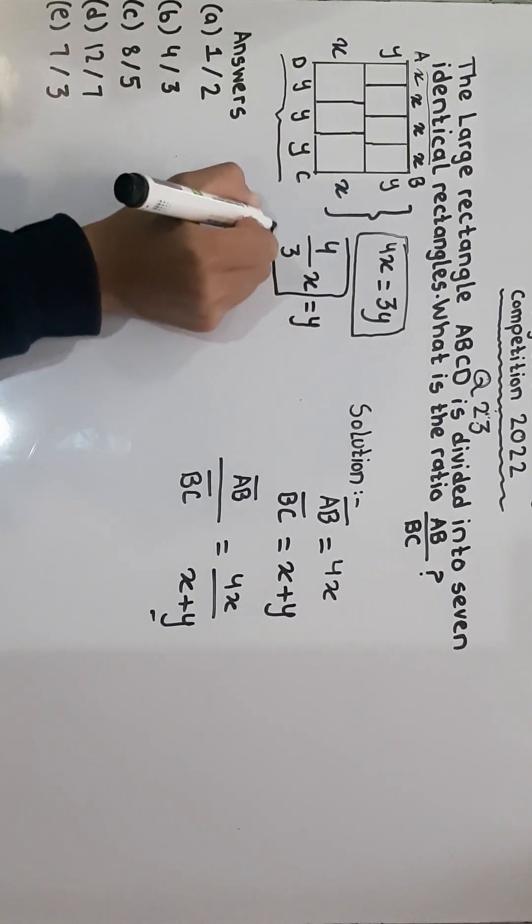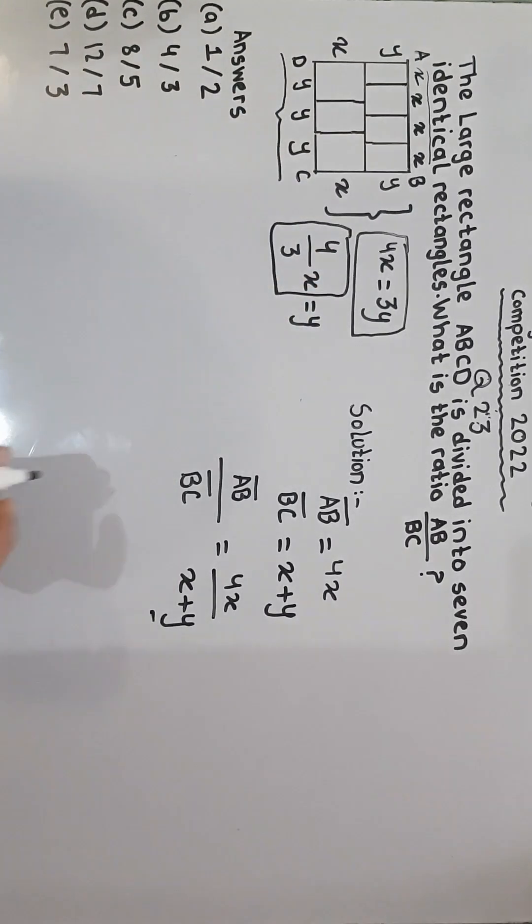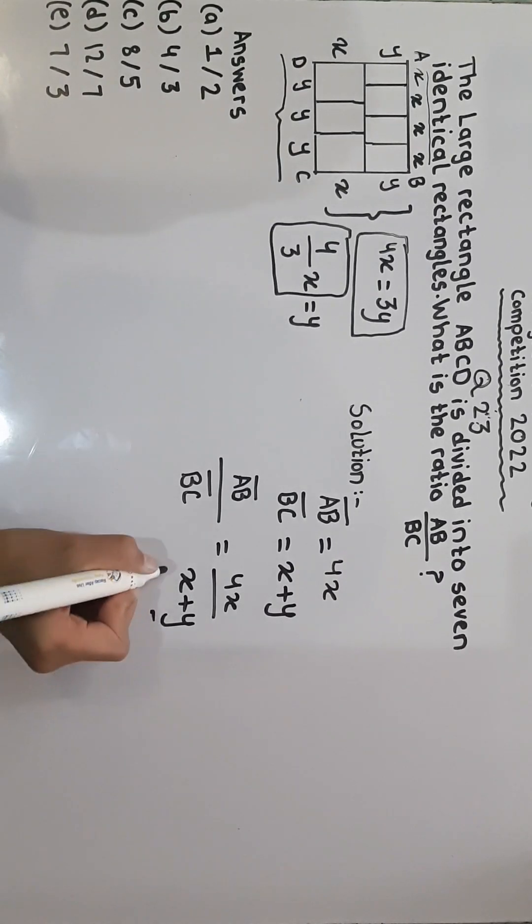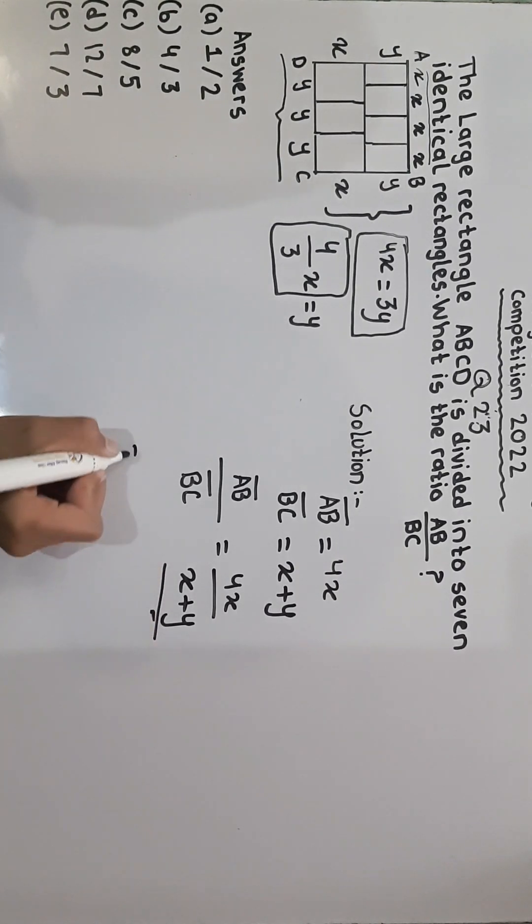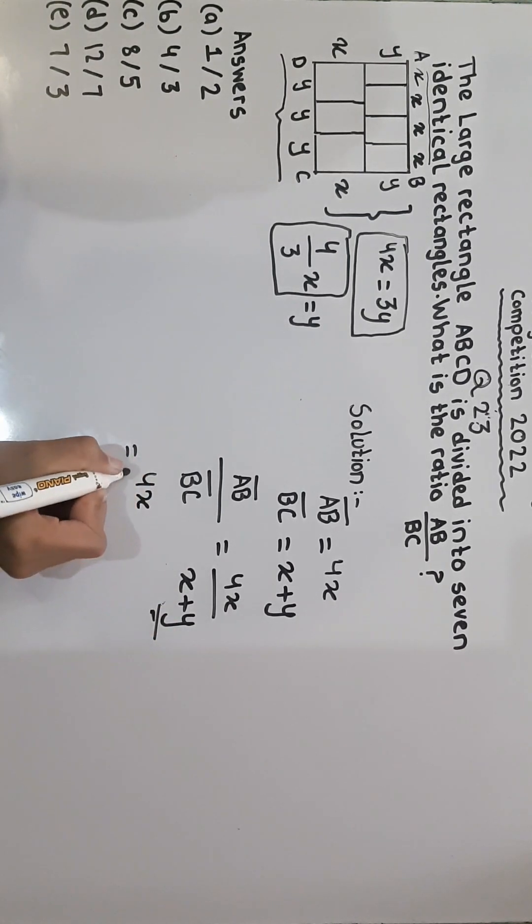And we will put this value here in the place of Y. Is equal to, in the place of Y, not this whole, in the place of Y. So 4X divided by X plus 4 over 3X.